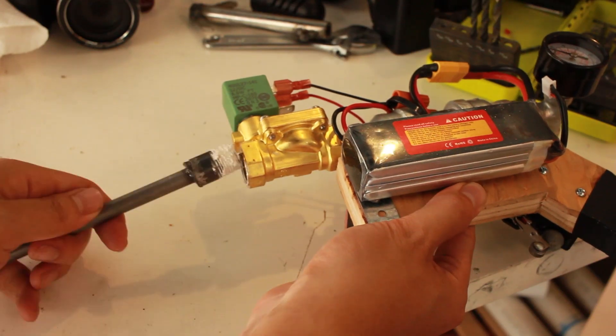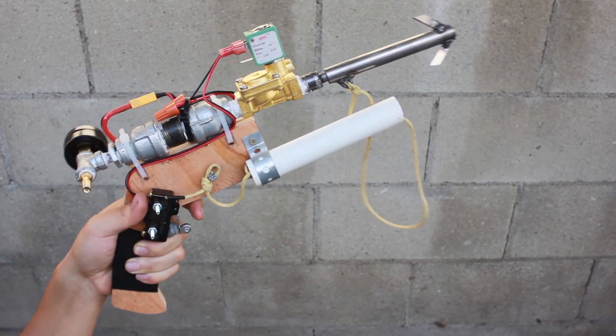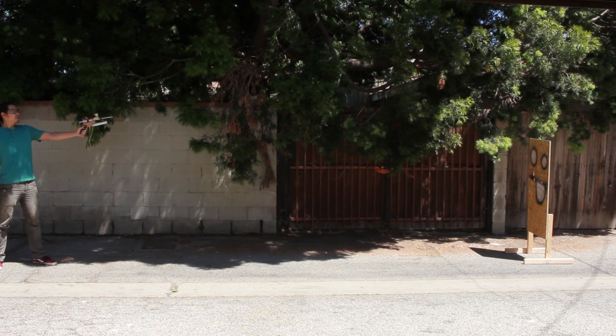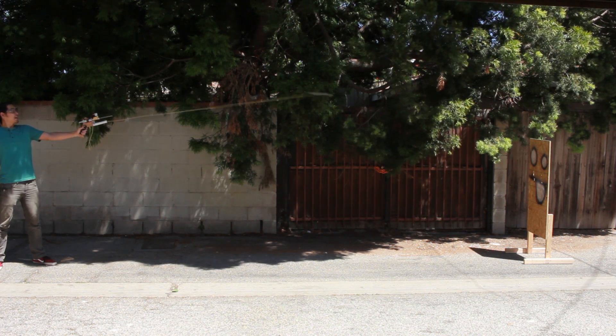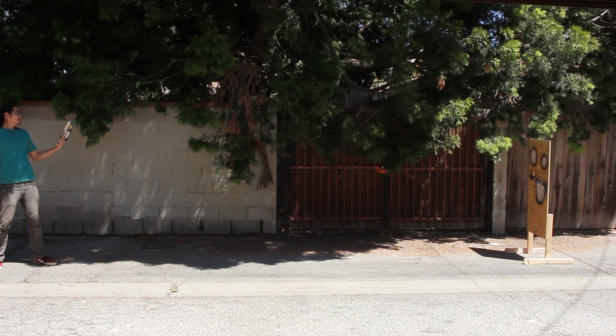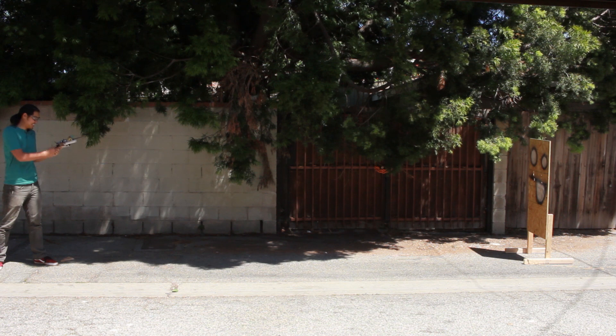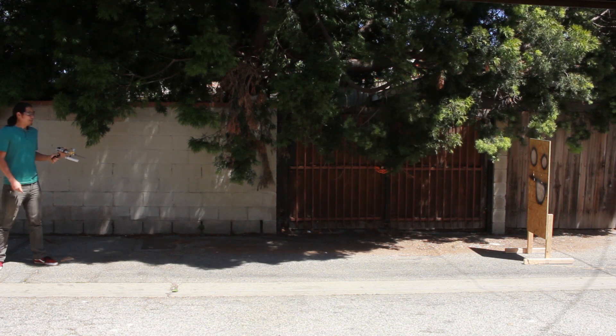Next, we're going to swap out barrels and try out the straw wrapper style grappling hook. Straw wrapper style grappling hook, 150 PSI, in three, two, one. I kind of, I guess I didn't tie it to the... Well, that works alright.